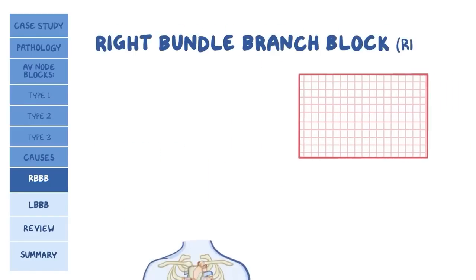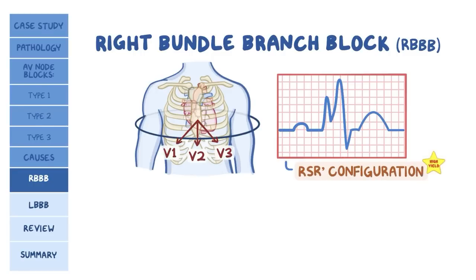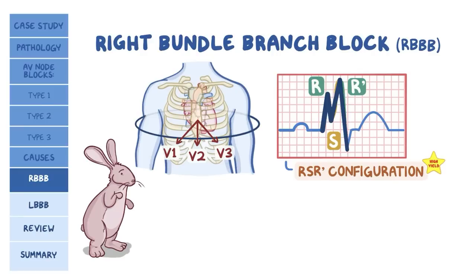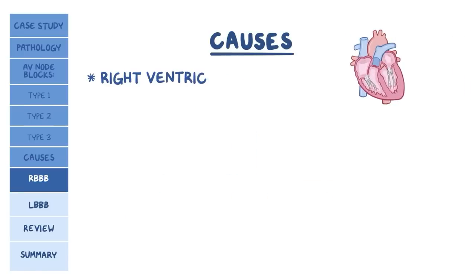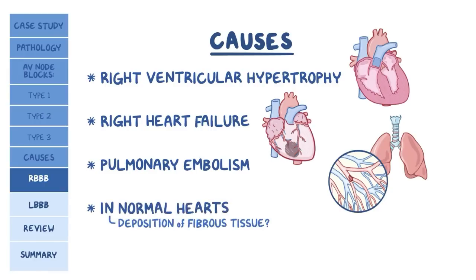In right bundle branch block, or RBBB, the high-yield fact to remember is that the QRS complexes in the right-sided chest leads V1, V2, and V3 show an RSR configuration — a pronounced R wave, followed by a deep S wave, and then another R wave. This gives the QRS complex the appearance of rabbit ears, or the capital letter M. To remember this, think: RBBB equals rabbit ears in the right-sided chest leads. Causes of RBBB include right ventricular hypertrophy, right heart failure, and pulmonary embolism. Also, for unknown reasons, RBBB can be present in normal hearts, possibly due to deposition of fibrous tissue that interrupts the conduction pathway.